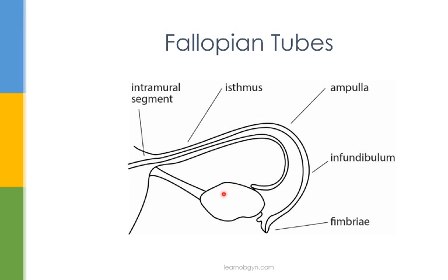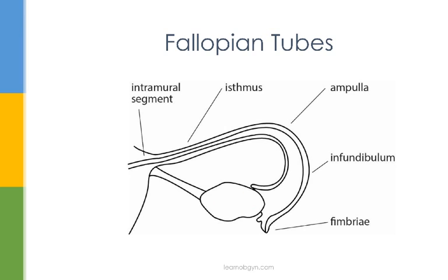And of course, we have the ovaries. The ovaries are covered by a fibrous capsule called the tunica albuginea, which itself is covered by a germinal epithelium. Of note is the fact that the ovaries are not covered by peritoneum. This is what makes it so easy for ovarian cancer to spread into the abdomen.